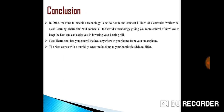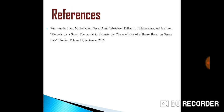In conclusion, machine-to-machine technology is set to boom and connect billions of electronics worldwide. The Nest learning thermostat will connect all the world's technology, giving you more control of how to keep the heat and assist in lowering your heating bill. The Nest thermostat also lets you control the heat from your smartphone and comes with a humidity sensor to connect to your humidifier and dehumidifier. This presentation references a paper titled 'Methods for a Smart Thermostat to Estimate Characteristics of a House Based on Sensor Data,' published by Wim van der Hem, Michael Klein, Syed Amin, and Dilhan. Thank you so much.